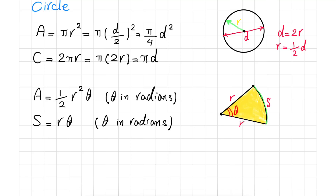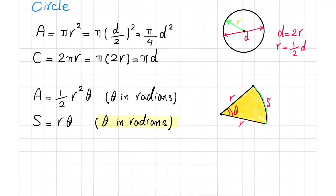It is very important that theta is in radians. If your angle is in degrees, please convert it to radians first; otherwise you will get a wrong number for the area or the arc length of the sector.